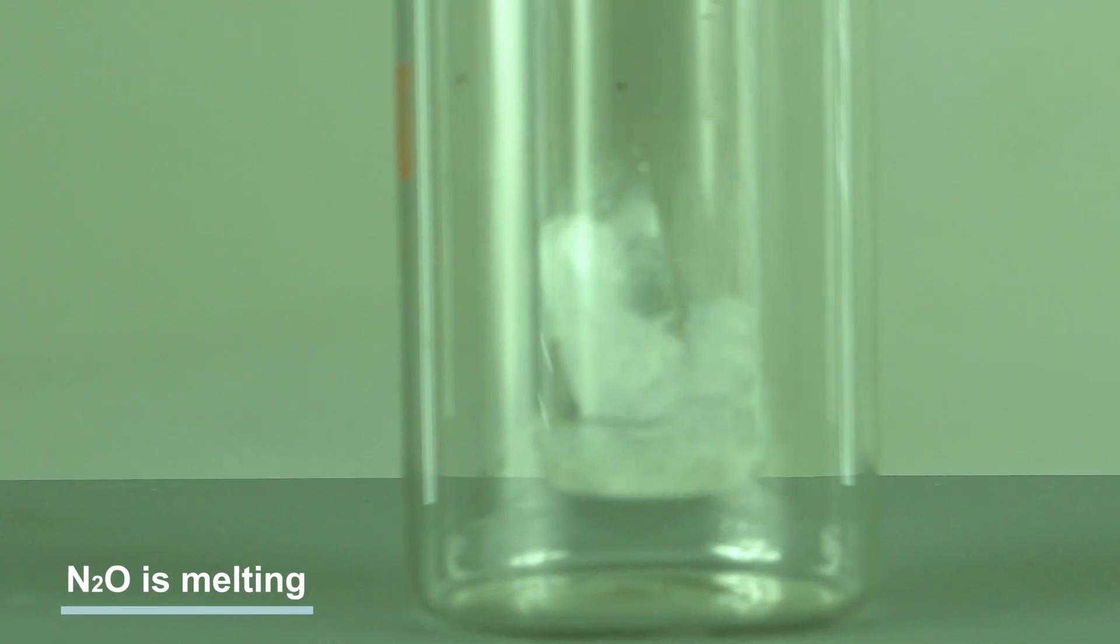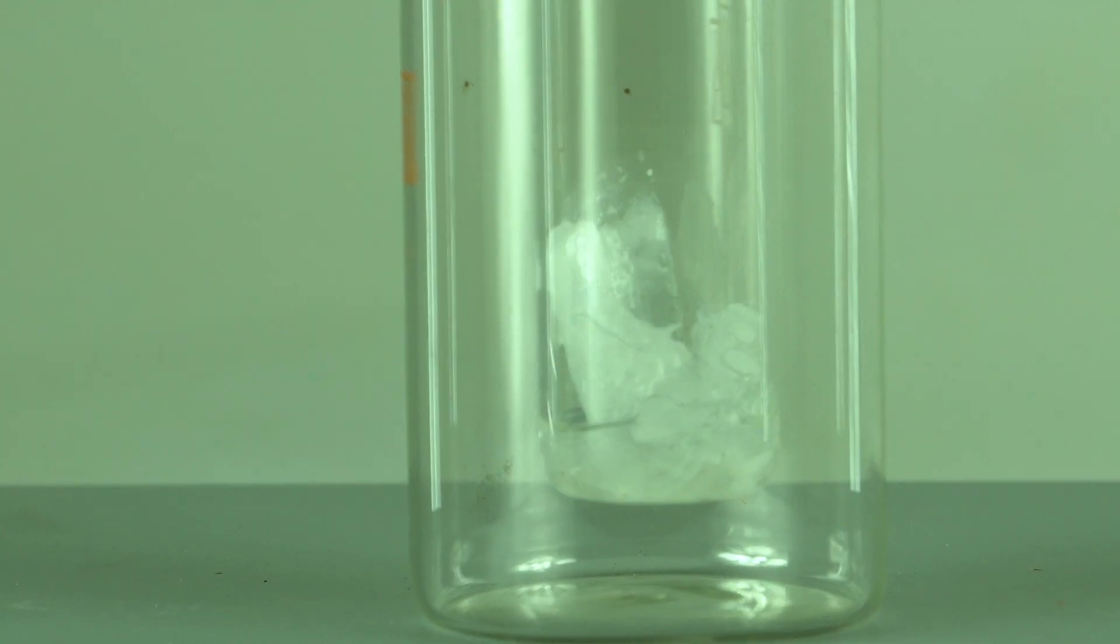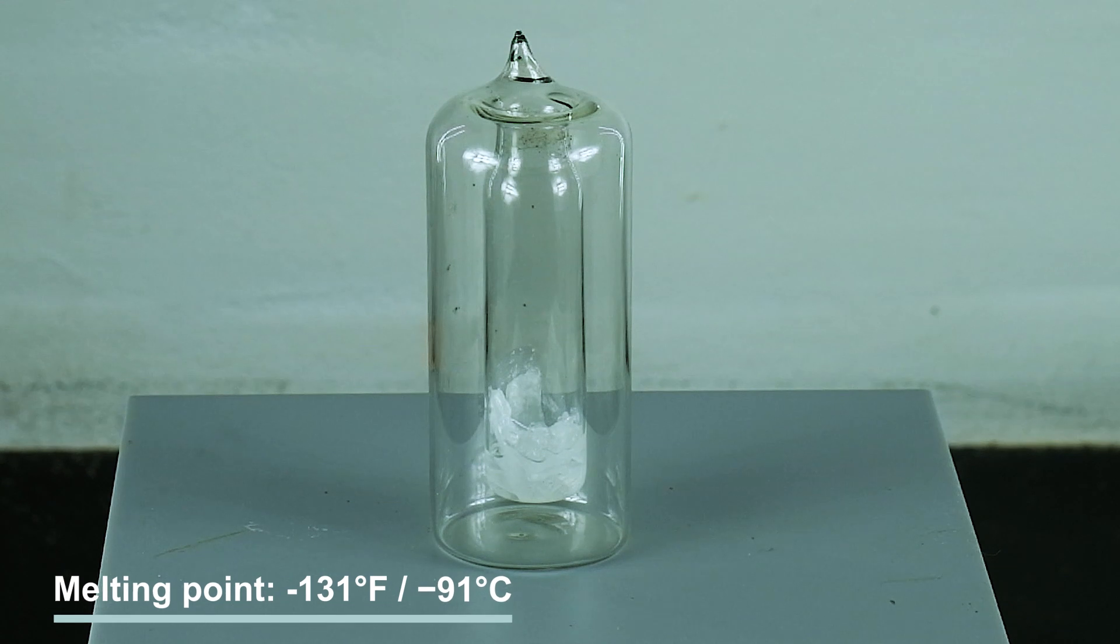To be precise, the melting of which you can see now. Nitrous oxide freezes at minus 131 degrees Fahrenheit or minus 91 degrees Celsius.